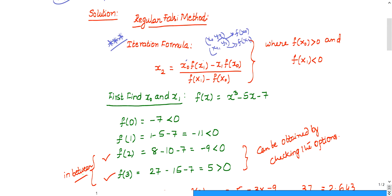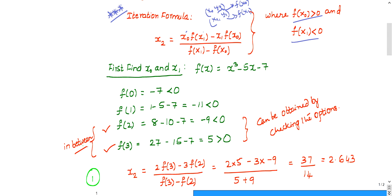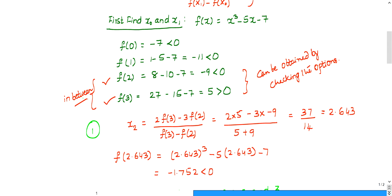It is given that f of x0 should be greater than 0 and f of x1 should be less than 0. One root should be greater than 0, one root should be less than 0. So first you need to find what is x0 and x1. From this given function, let us substitute different values. First I will put 0, then you get minus 1, less than 0. Then put 1, you get minus 11. Then put 2, this is minus 9 less than 0. Then you put 3, then it is plus 5, greater than 0.